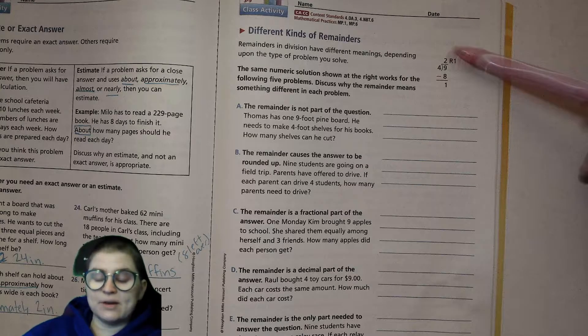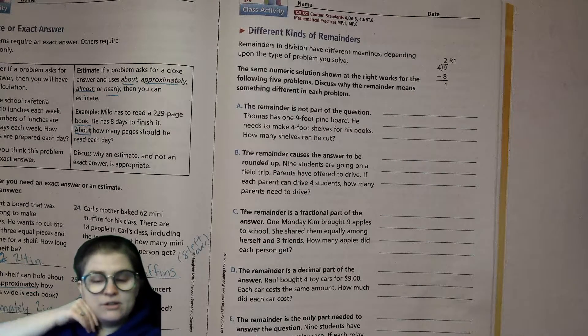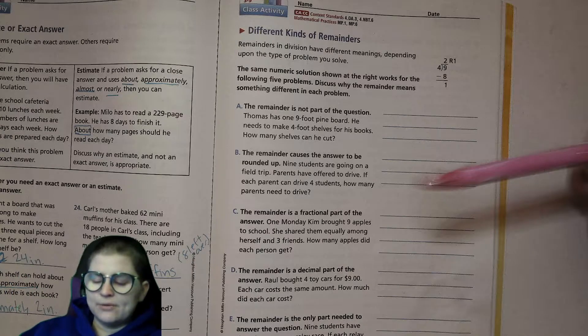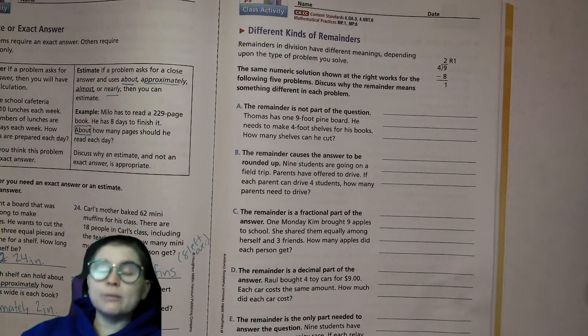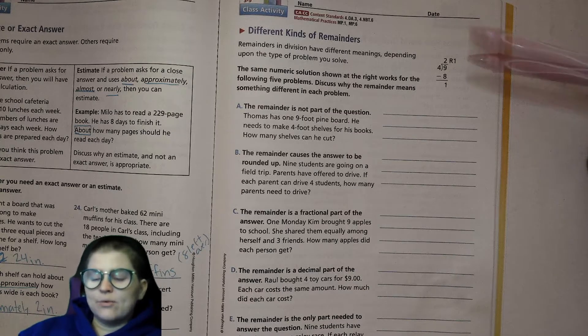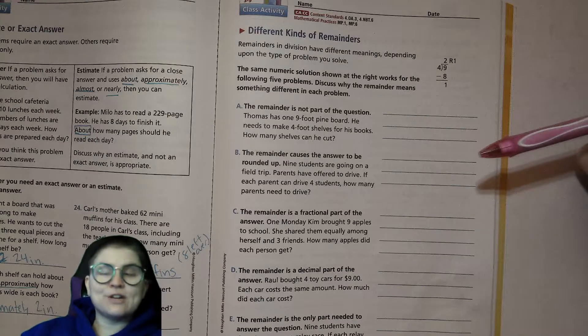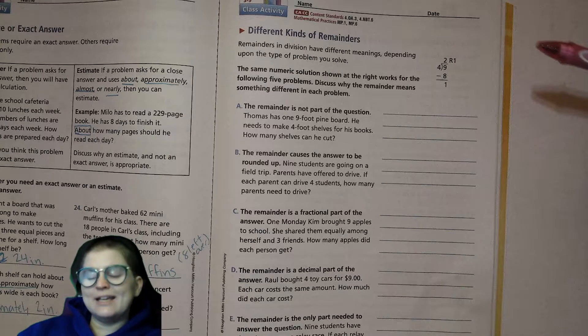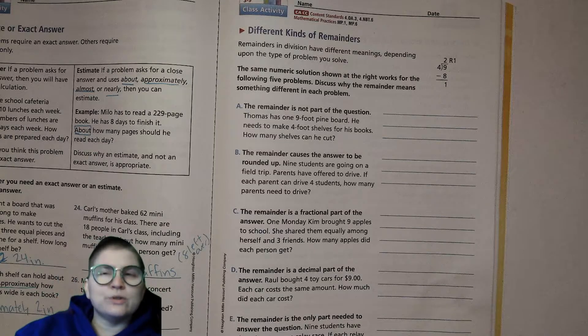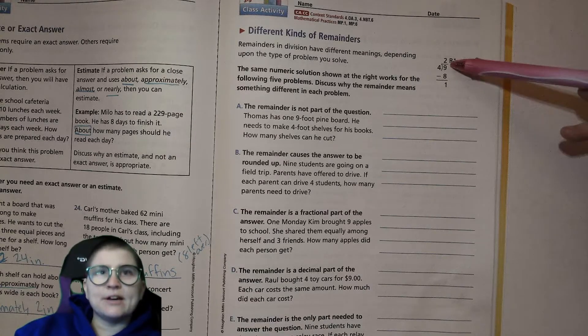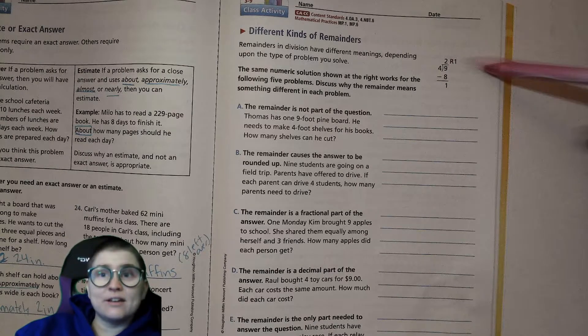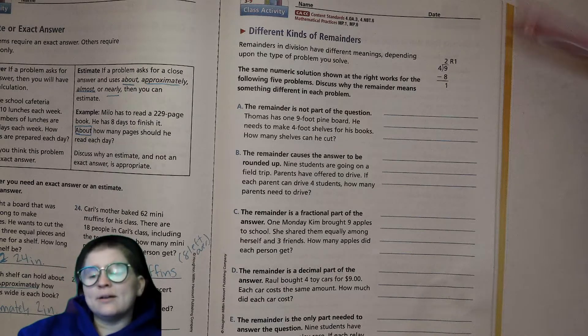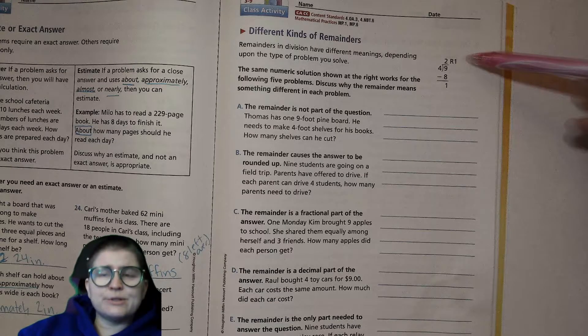Now with remainders, that one left over can mean different things. Sometimes it's not part of the question, sometimes it needs to be rounded up, so bring that 2 to a 3 because of that one left over. Sometimes it's a fraction part of the answer, and then sometimes it's a decimal which means that little period in math, usually you'll see that in money. And then sometimes it's the only part needed in the question.